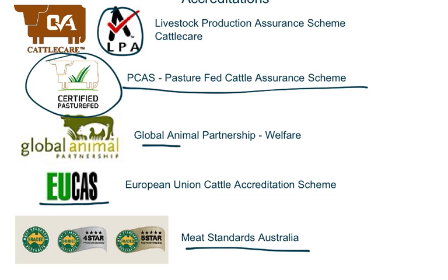GAP — Global Animal Partnership Welfare — is an international program that rewards producers for high standards of animal welfare, allowing use of the corresponding labels on products.